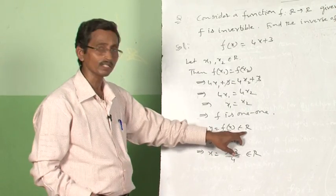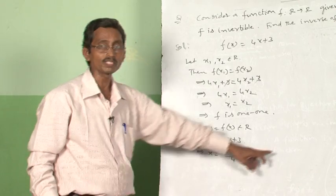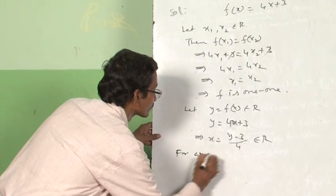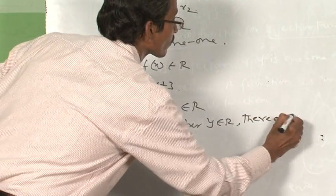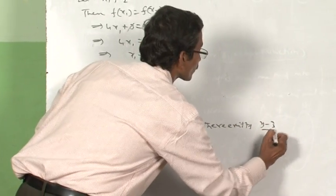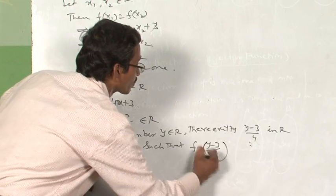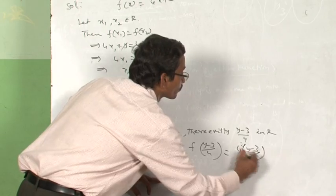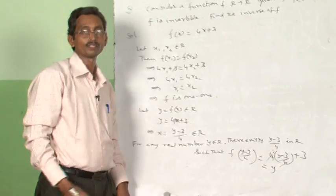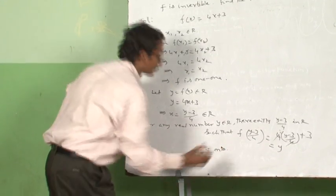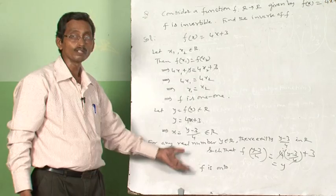For any real number y in ℝ, there exists x = (y − 3)/4 such that F((y − 3)/4) = 4·((y − 3)/4) + 3 = (y − 3) + 3 = y. So it is also in ℝ. Therefore F is an onto function. Clearly, we have proved F is a one-one function and F is therefore an invertible function.